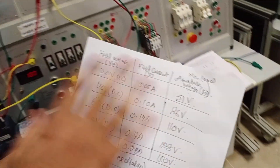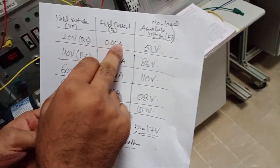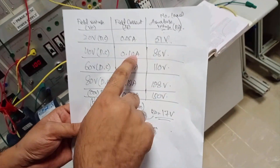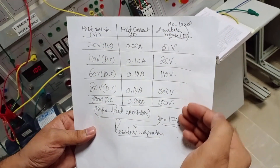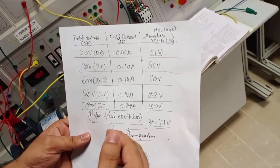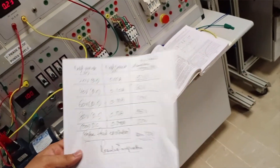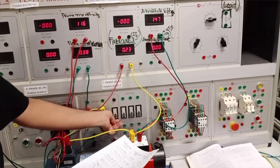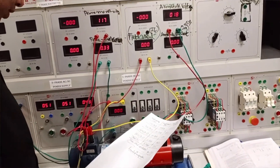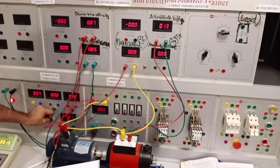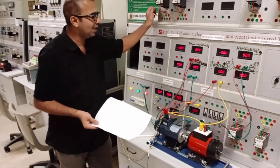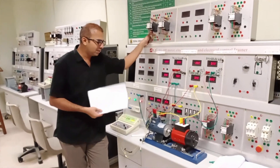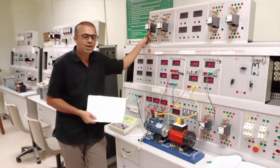The total plot of these values: at 20 V field excitation, 0.05 A field current and 51 V armature voltage; at 40 V, the field current increases further. As field excitation current increases, the armature no-load voltage increases. This was the experiment of the separately excited DC generator connected with the separately excited DC source field winding.